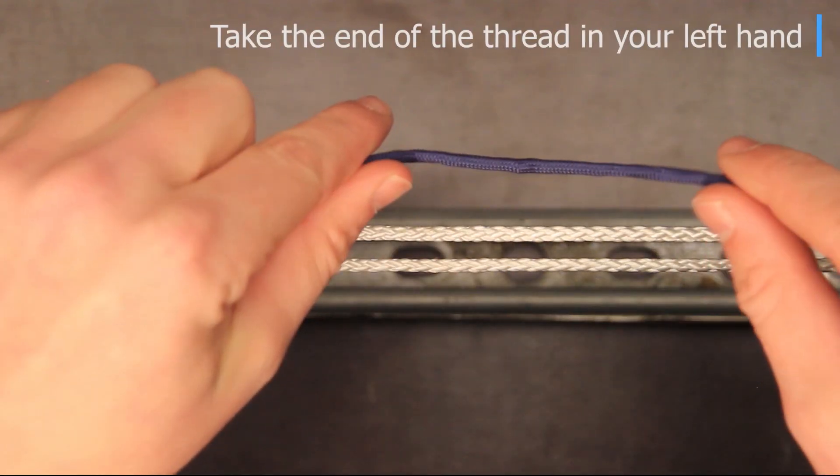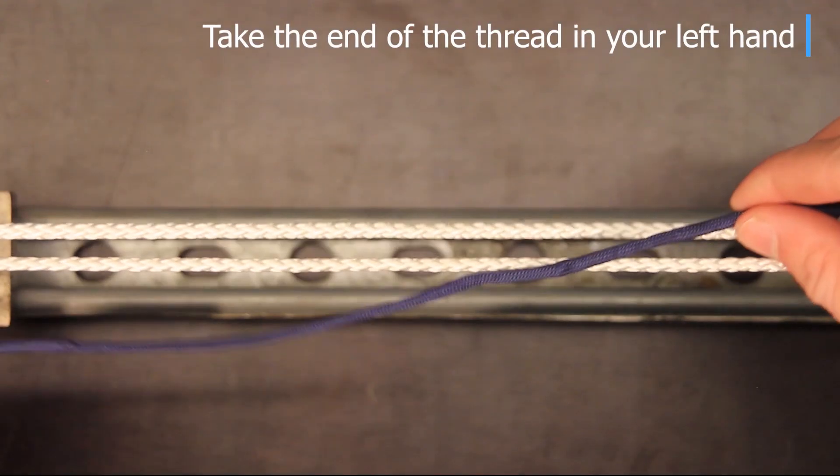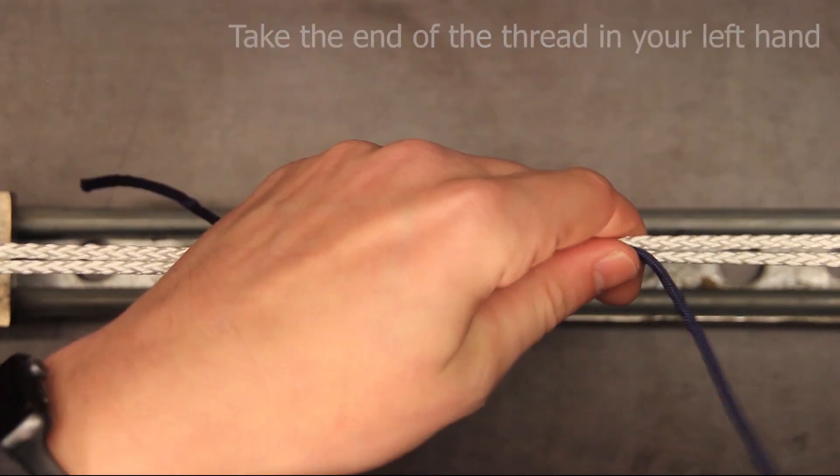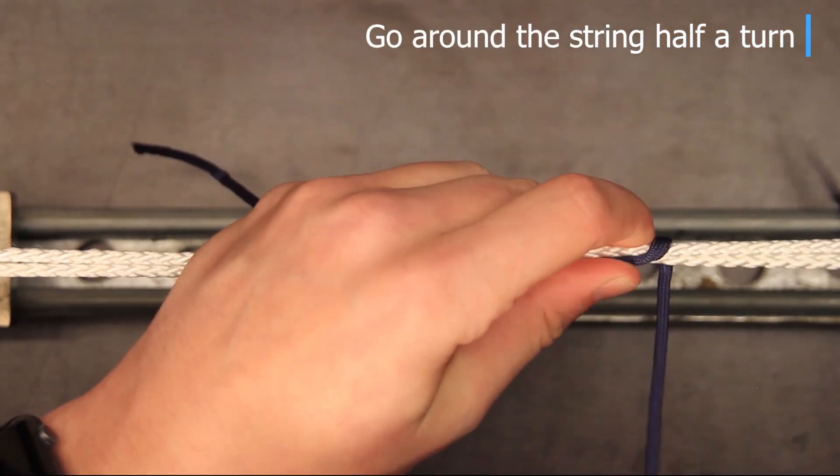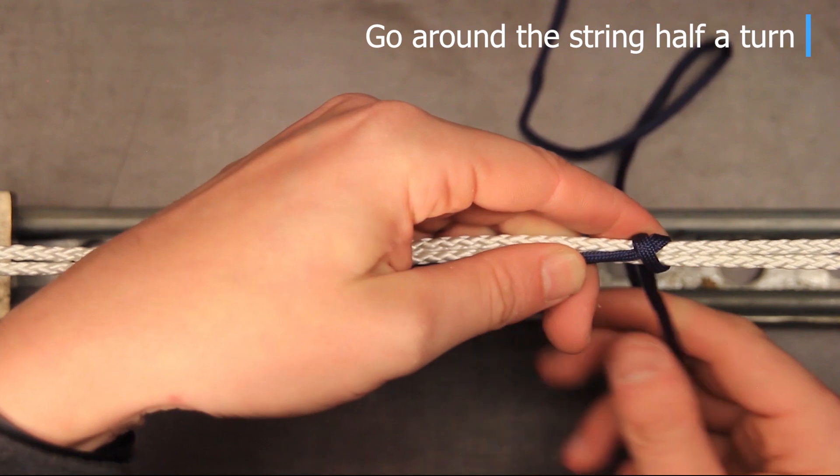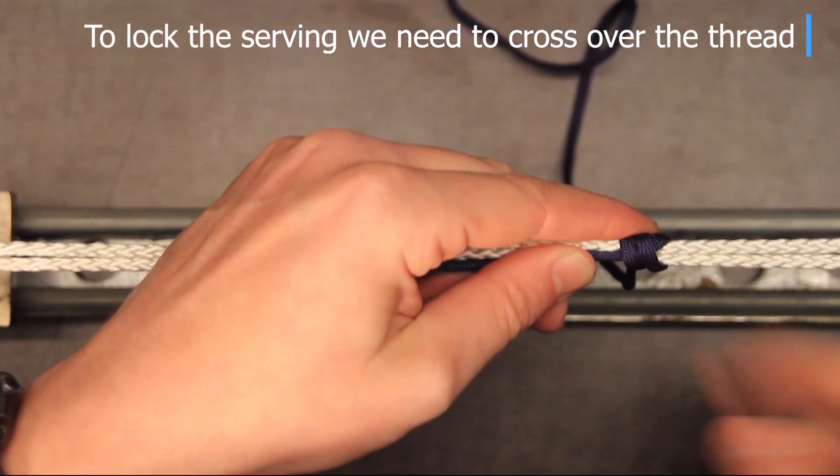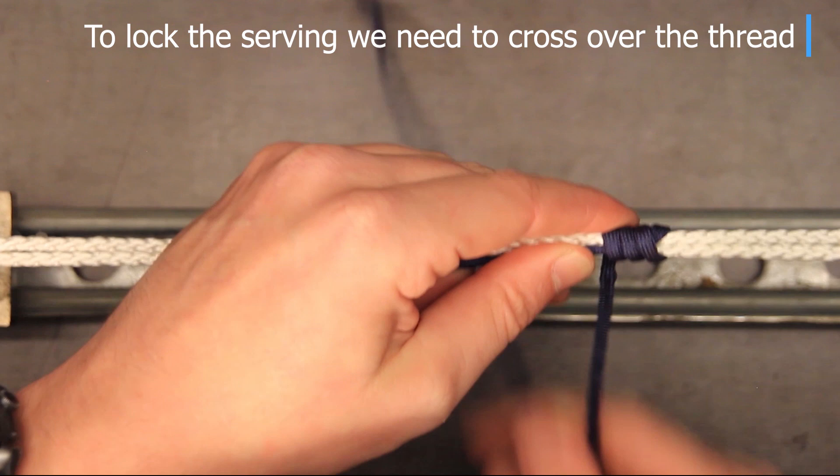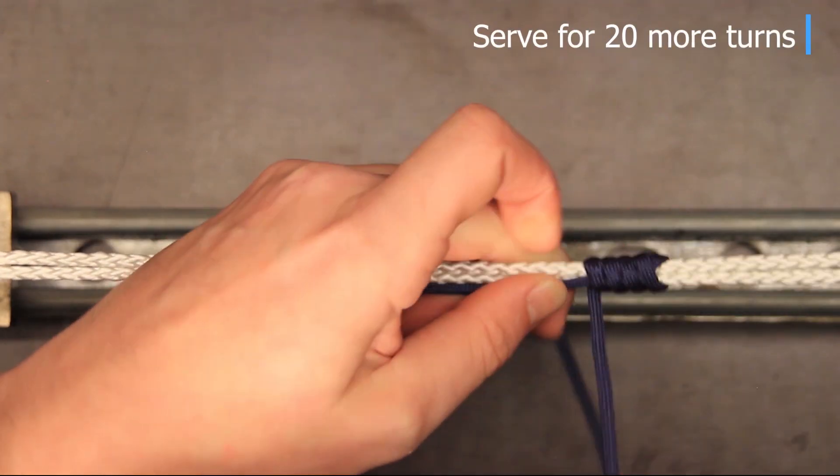So knot number three is how to tie a peep side knot and we start the same way as we do with serving thread in your left hand go around the string for half a turn and cross over and we'll make about five turns in this video but usually I would do about 20.